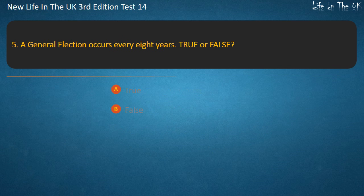Question 5. A general election occurs every 8 years — true or false? Answer: False.